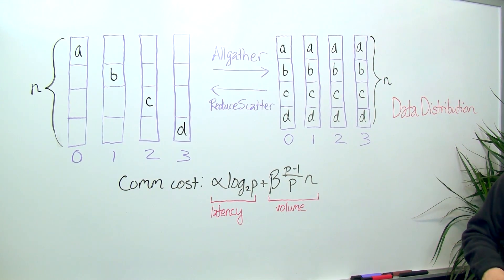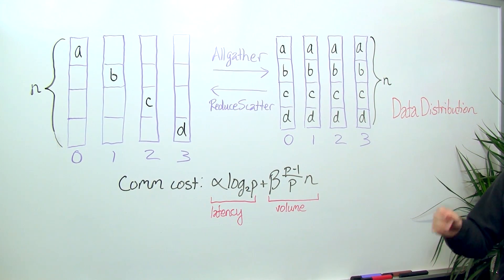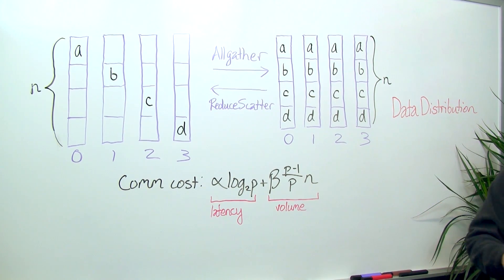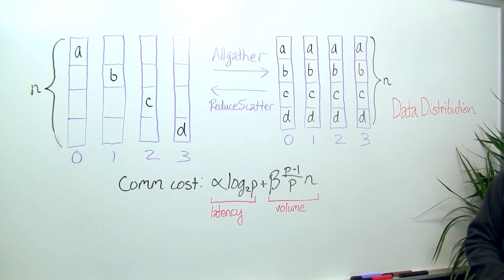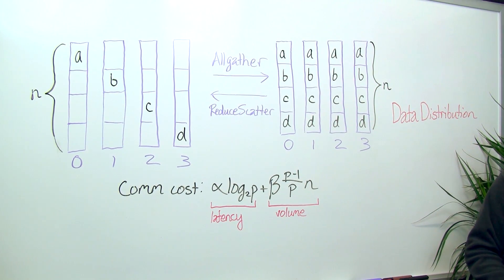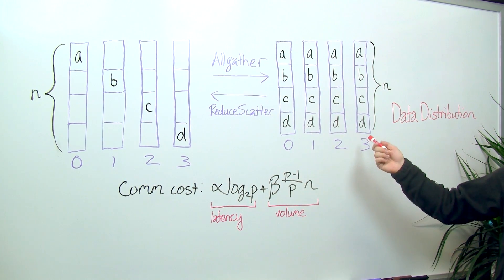If we suppose that each of these four processes had one of those pieces, say process 0 gets piece A, process 1 gets piece B, etc., then the purpose of an allgather is to perform all the necessary communication so that every process has a copy of A, B, C, and D, which you can see on the right.